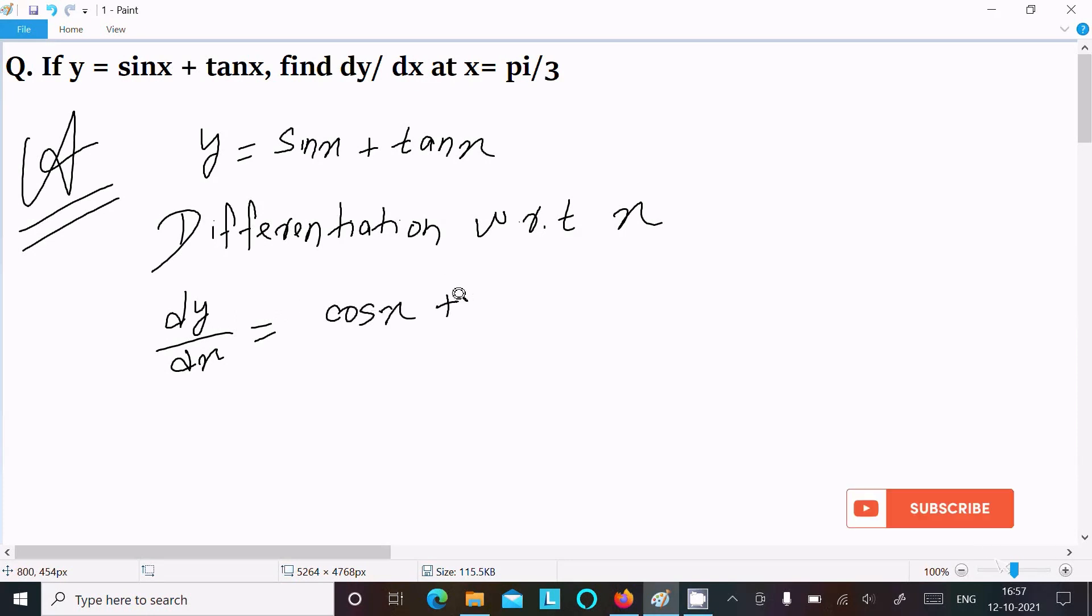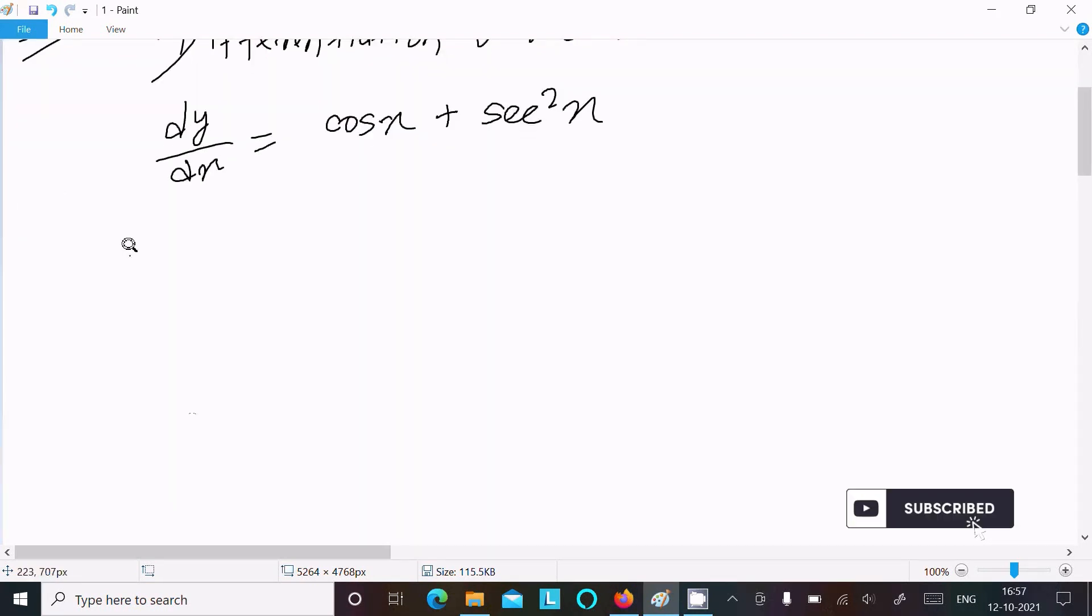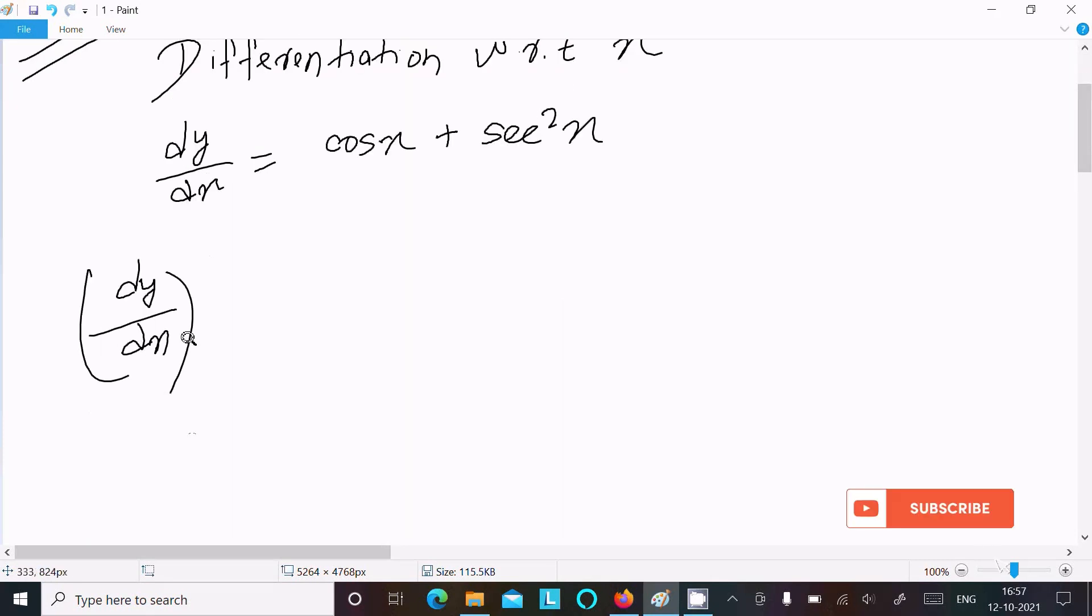Now dy/dx at point π/3. So dy/dx at x = π/3. Now π/3, that is equal to 180/3, which equals 60 degrees. So here we have cos 60 plus sec² 60.